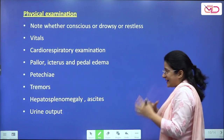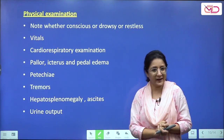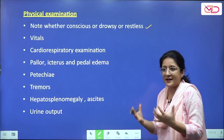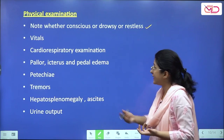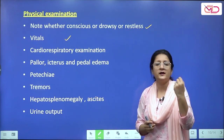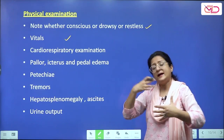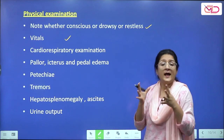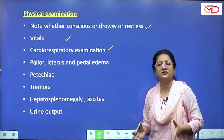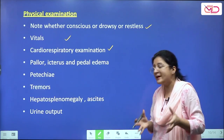On physical examination, note whether she is conscious, drowsy, or restless, and check for symptoms suggestive of hepatic encephalopathy. Note the vitals — checking blood pressure is very important. Check for urine protein by a simple dipstick in the emergency, and later go for 24-hour urine protein estimation. Don't forget a cardio-respiratory examination, as these sick patients — especially those with preeclampsia, HELLP, or AFLP — can have difficulty breathing due to pulmonary edema.